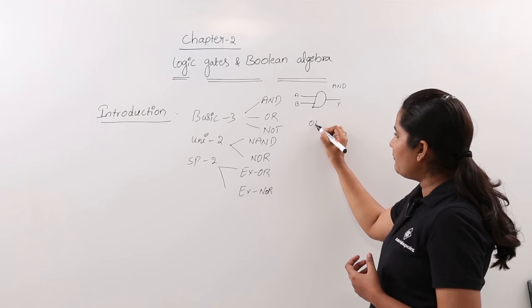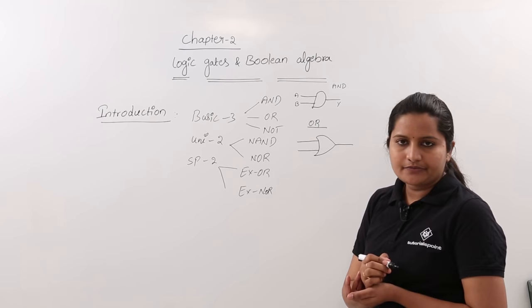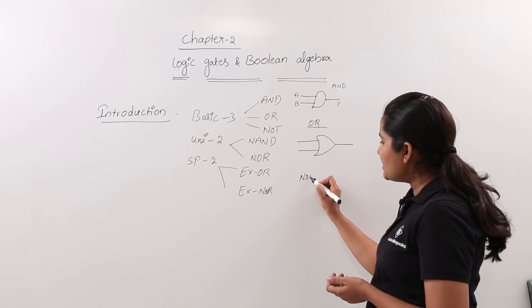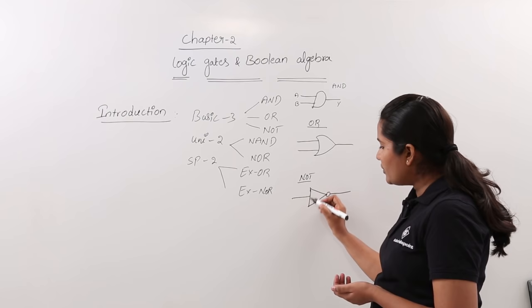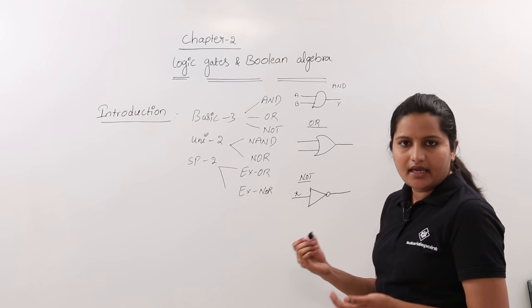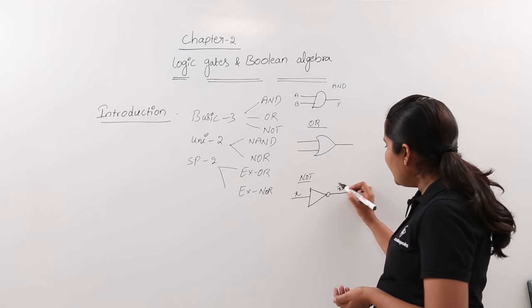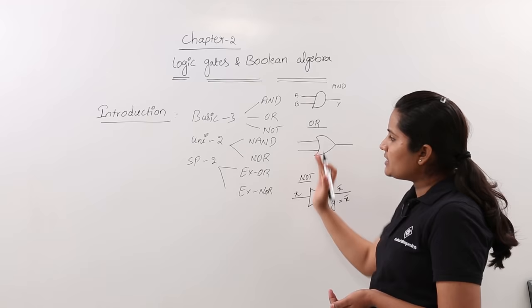The logic symbol for the OR gate will be like this — this curved shape is the symbol for the OR gate. For the NOT gate, the logic symbol is like a buffer symbol — a triangle-like shape — but with a bubble added. As you give input A, you get A-bar at the output. If Y is the output of a NOT gate, then Y is the complement of the input, that means you get X-bar. These are the logic symbols for the basic gates.